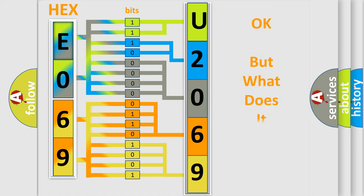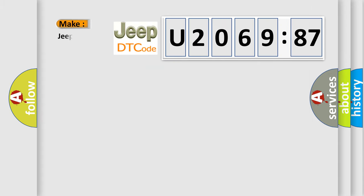The number itself does not make sense to us if we cannot assign information about it to what it actually expresses. So, what does the diagnostic trouble code U206987 interpret specifically for Jeep car manufacturers?